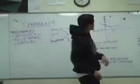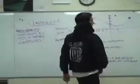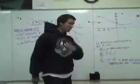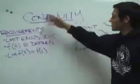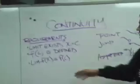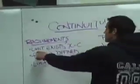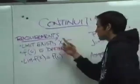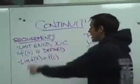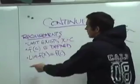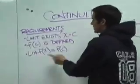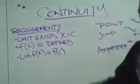Hey! Continuity, for example. So first of all, as Edgar already talked about, the requirements: the limit must exist at x equals c, the function f(c) is defined, and the limit of f(x) is equal to f(c).